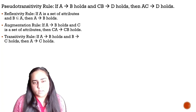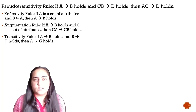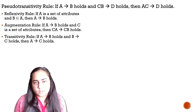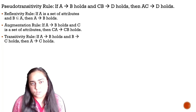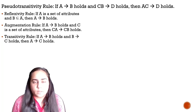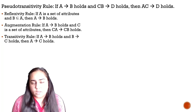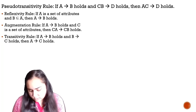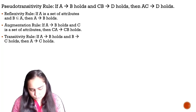Hello and welcome back to database management systems. This video is in continuation of the previous video where I talked about Armstrong's axioms and proved the union and decomposition rules. In this video I'm going to prove the pseudo-transitivity rule and then we'll go ahead and talk about canonical covers and how to calculate them. So let's first begin with the pseudo-transitivity rule.